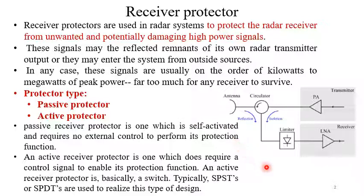A passive receiver protector is one which is self-activated and requires no external control to perform its protection function. An active receiver protector is one which does require a control signal to enable its protection function. An active receiver protector is basically a switch — typically SPST or SPDT switches are used to realize this type of design.